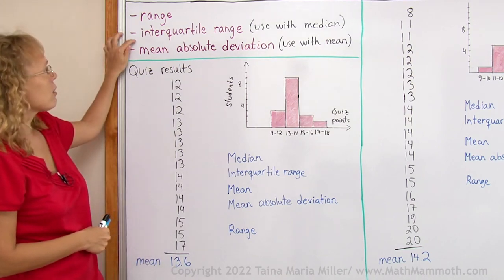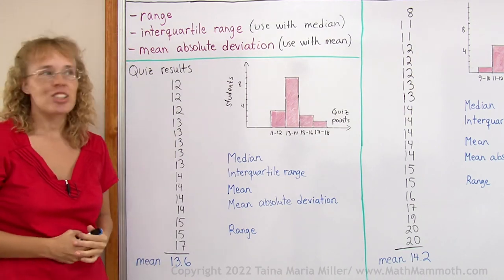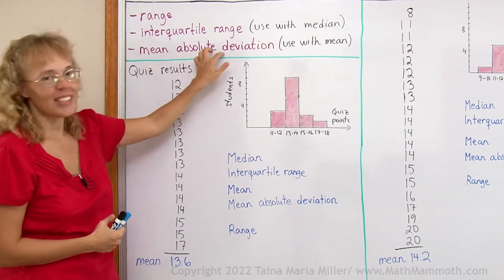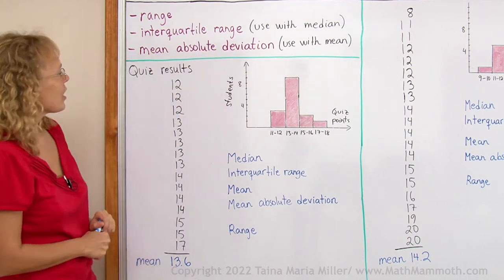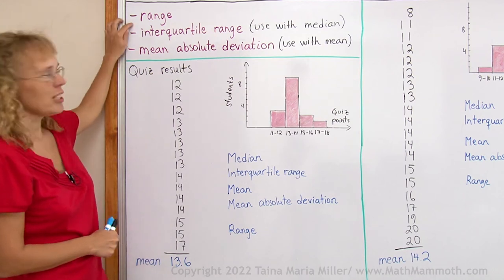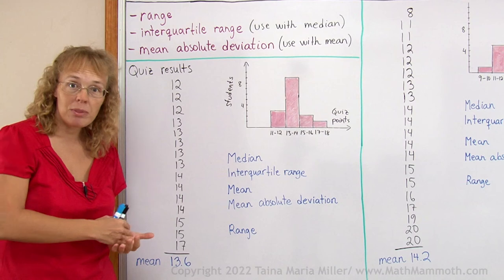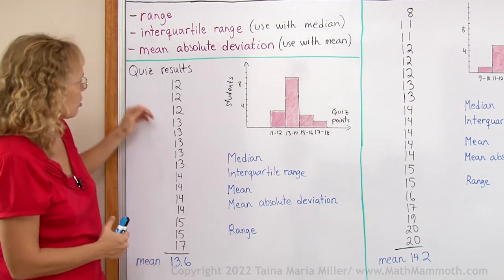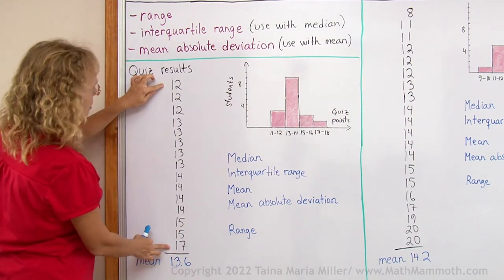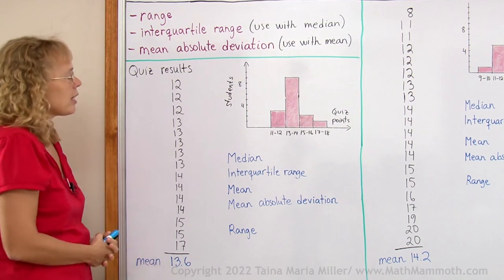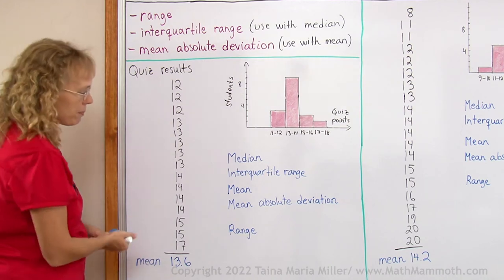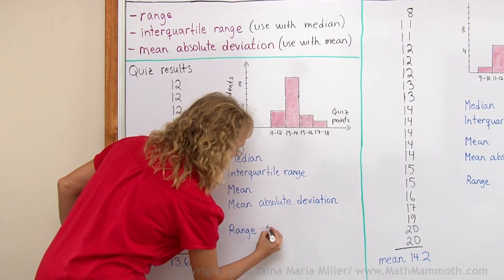Range, interquartile range, and mean absolute deviation, also called MAD for short. Now range is the easiest. It is basically just the difference between your minimum and maximum value. So you look at the minimum and the maximum, 12 and 17 in this case, and subtract. And so that is the range. So this is 5.